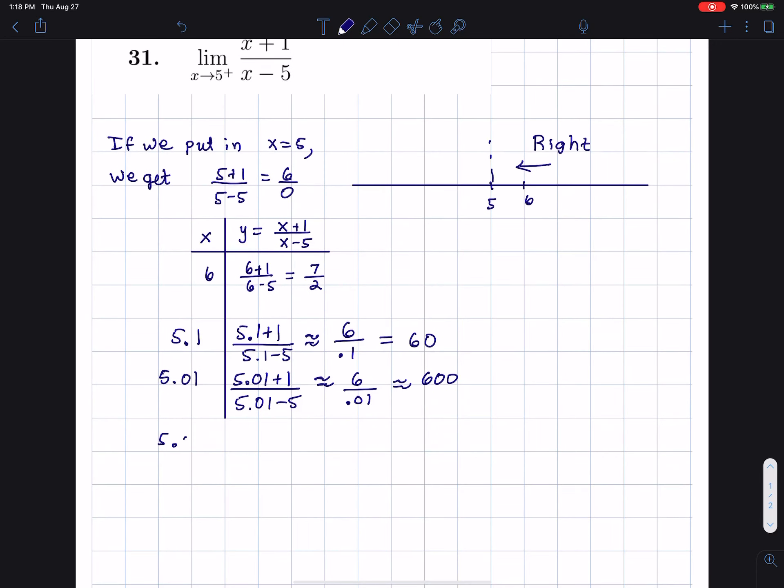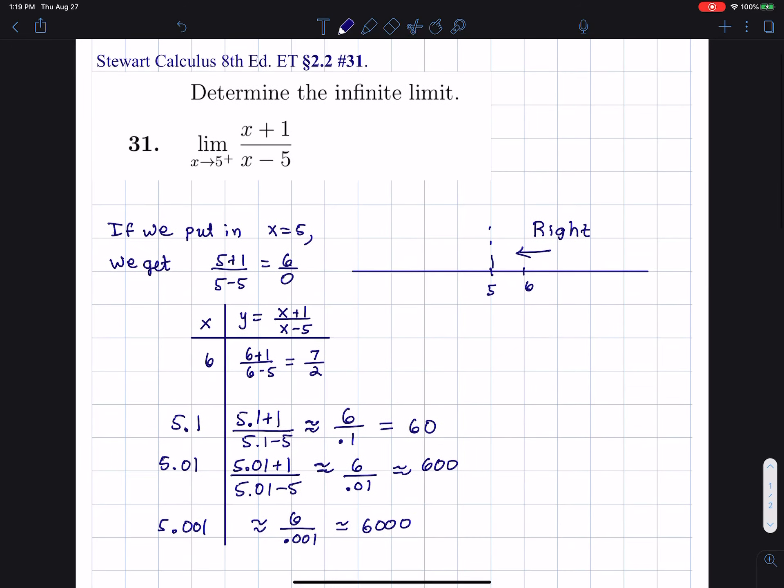Et cetera. I'm sort of thinking I see something going on here, that I see a pattern here, that the numerator is going to be around 6. And I'm going to get, in this case, 6,000, because the denominator is going to be 0.001. What do I need to convince myself? It looks like it's getting bigger and bigger as x gets closer to 5. What's getting bigger and bigger? Y is. Y is getting bigger in magnitude, and it's positive.